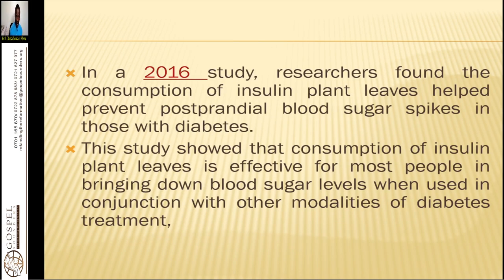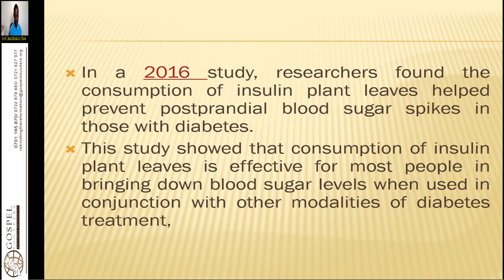In 2016, researchers found that consumption of insulin plant leaves helped prevent postprandial blood sugar spikes in those with diabetes. This study shows that consumption of insulin plant leaves is effective for most people in bringing down blood sugar levels when used in conjunction with other modalities of diabetes treatment, such as constant exercise, drinking a lot of water, taking green leafy vegetables, eating fruits, and also using plantain.